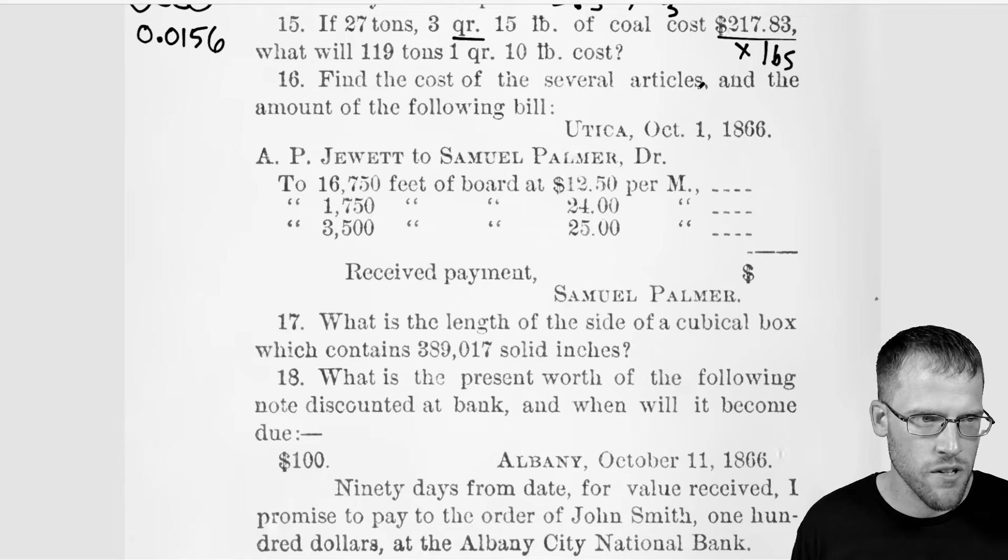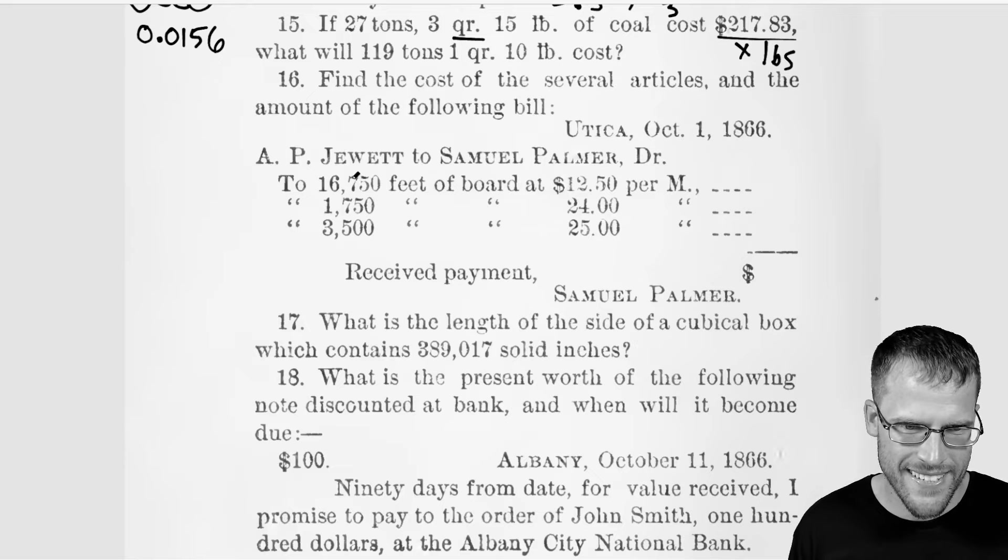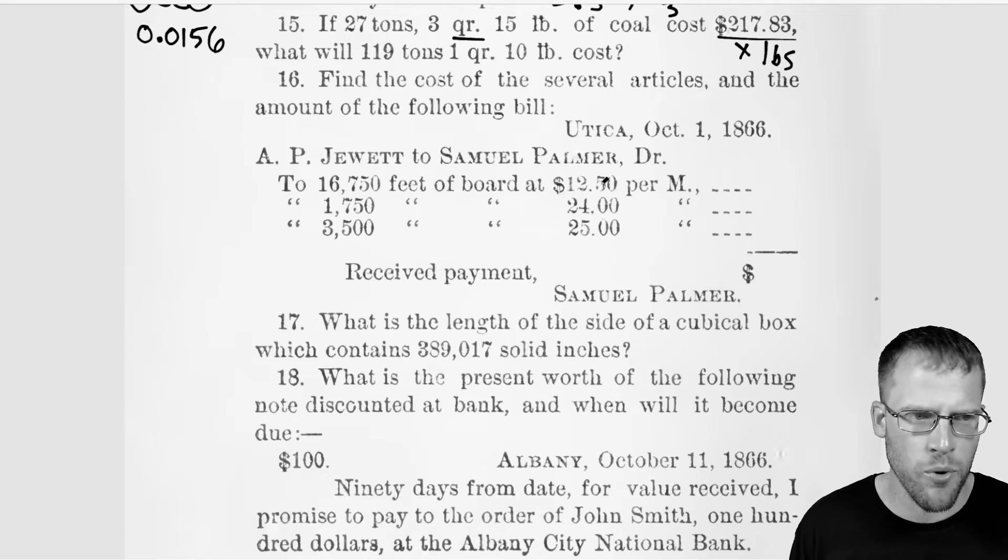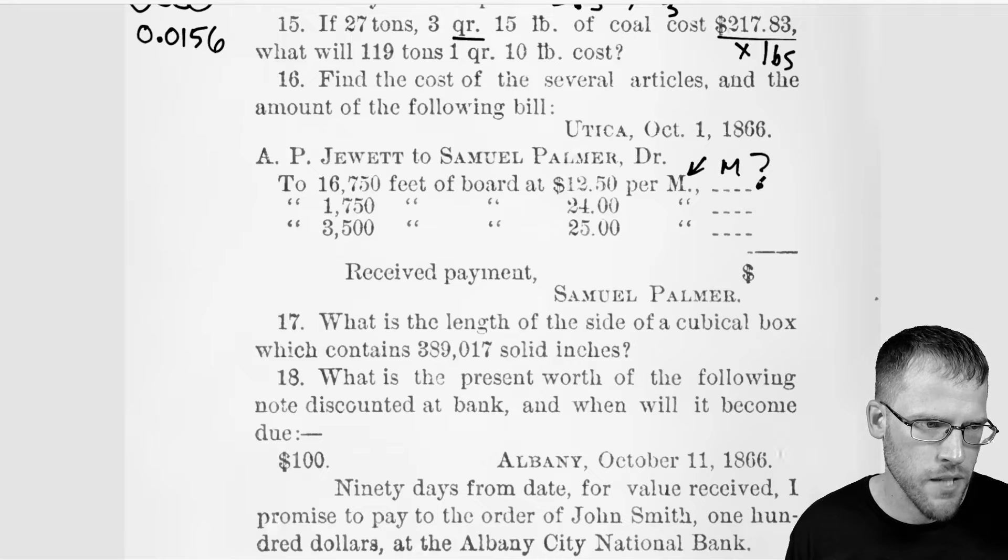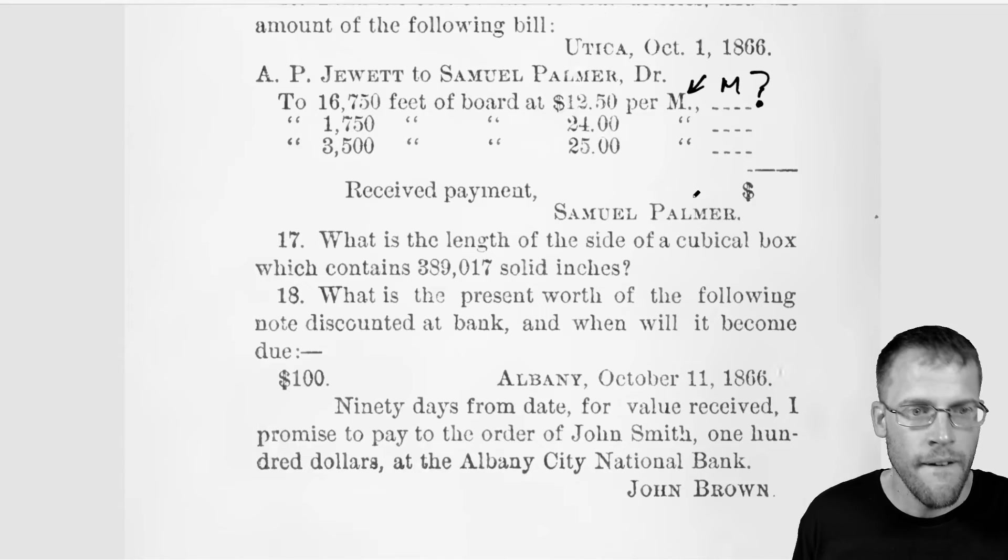So let's see here. Find the cost of the several articles and the amounts of the following bill. It is 16,750 feet of board at 1250 per M. I don't know what M is, so I will not be able to answer this. Once again, the units are really just throwing me off here. So now let's move on.